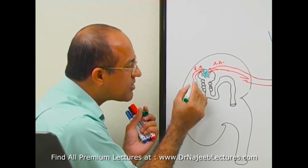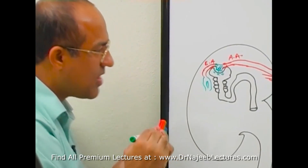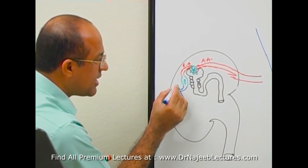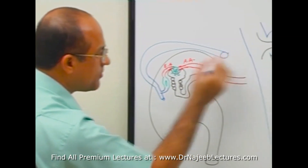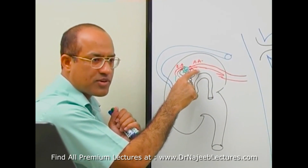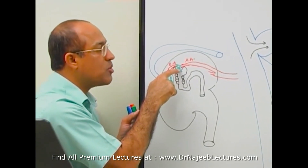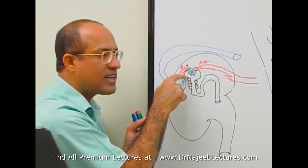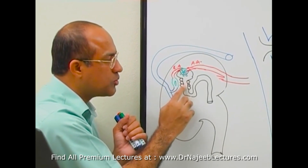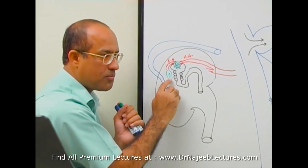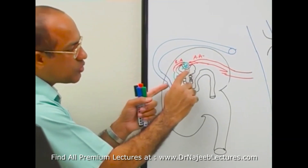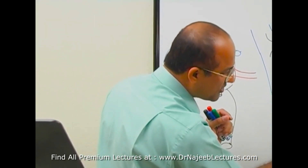Then the efferent arteriole again breaks up into a second set of capillaries, and eventually these second capillaries drain into the venous side — progressively larger veins and eventually back through the renal veins. So in the kidney the pattern is: arterial system → afferent arteriole → glomerular capillaries → efferent arteriole → peritubular capillaries (the capillaries around the tubule) → venous drainage. This is an unusual pattern: between the two capillary sets there is an arteriole, whereas in the hepatic portal system, between the two capillary sets there was a venous segment.